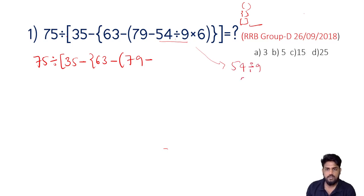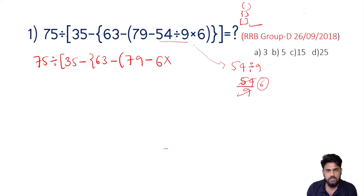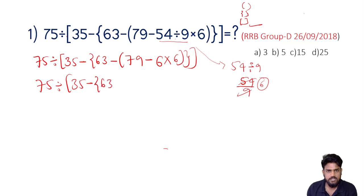How is simplification? 54 divided by 9 is 99. 96, 6 into 6 is 75. 75 divided by 35 minus 63, 79 minus 6 into 6. This is minus into 5. Simplification: 6 into 6 minus 6 into 6 is 36. 36.